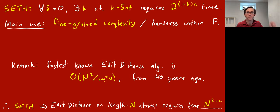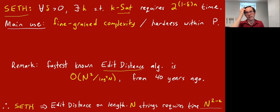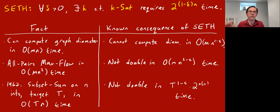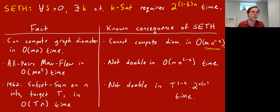Another way to think of it: if you could get an n^1.9 time algorithm for edit distance, you can translate that into an amazing algorithm for k-SAT — you would break SETH. There are many consequences of SETH like this. There's an ancient algorithm for finding the diameter of a graph in O(m · n) time — basically you run Dijkstra n times — and SETH implies you cannot get m · n^(1−ε). So if m is proportional to n, you have a sparse graph and can find the diameter in quadratic time, but SETH shows you cannot get it in sub-quadratic time. Similarly, for all-pairs max flow you can do it in m · n² time, and SETH implies you cannot do it in m · n^(2−ε) time.